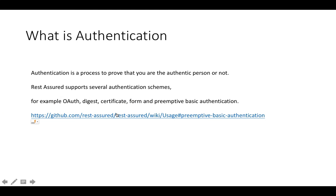In our previous examples we discussed certain APIs which do not require any kind of authentication — we were simply trying to find weather information or some random information. But when you start working in real time, this is not the case. Every company has certain APIs which require authentication. Until you pass the authentication, you cannot even access them — it is mandatory to pass authentication for APIs.